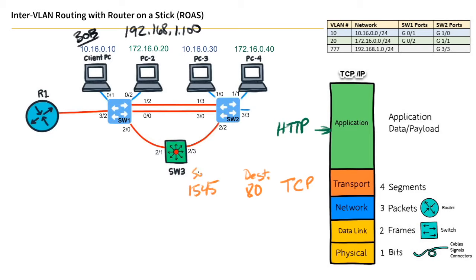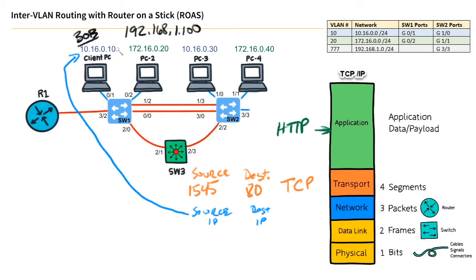The computer gets to choose the source port. If we looked at a protocol analyzer, we'd see the HTTP payload at the application layer, TCP at layer 4, a source port that Bob chose, going to the well-known port of the server. Before Bob's computer can put that on the network, it also needs to include logical layer 3 addressing - a source IP address and a destination IP address.